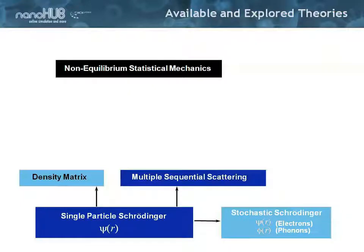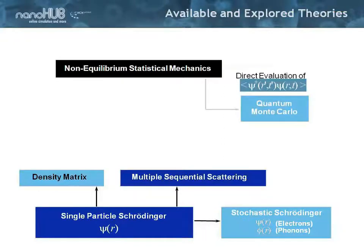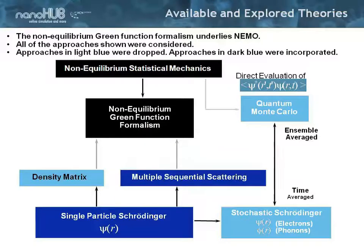People extended out from the single particle Schrödinger equation a density matrix approach, a multiple sequential scattering, or a stochastic Schrödinger approach. From the other end, people started evaluating quantum Monte Carlo expressions, which were computationally extremely expensive. And there is the NEGF approach — the non-equilibrium Green's function approach — which really bridges all of these connections except for the time-dependent statistical evaluations.